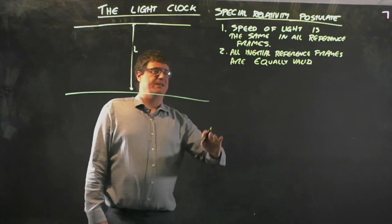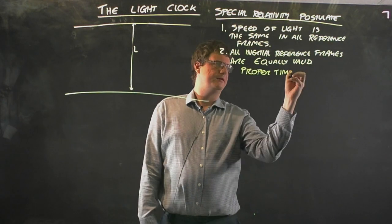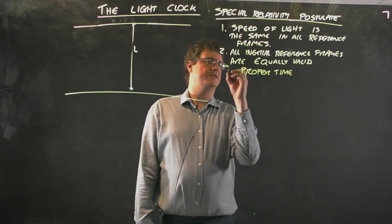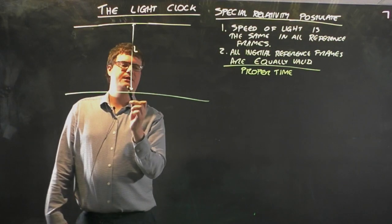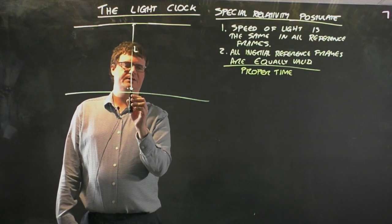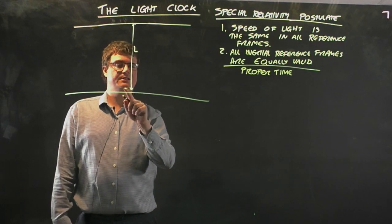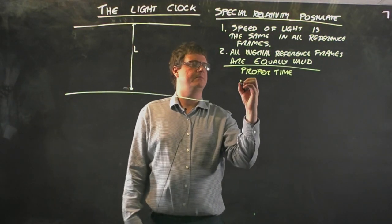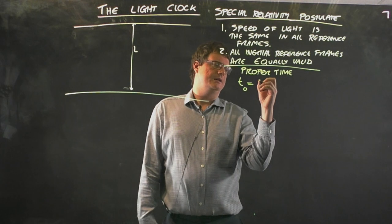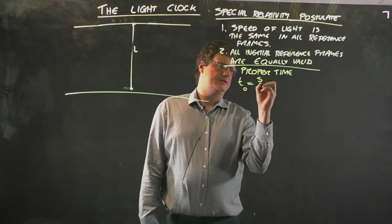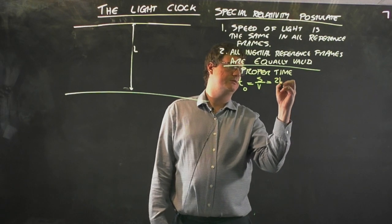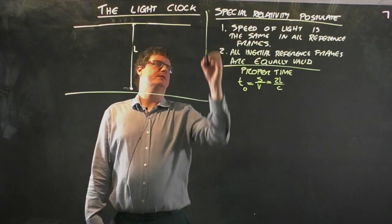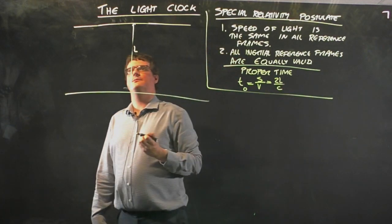If you're stationary relative to this thing you see the proper time. The proper time is the time where the two events happen in the same place. The two events are the light leaving this bottom mirror and the light coming back to this bottom mirror. We call that T naught and it's equal to the distance the light travels divided by the speed of light, which is 2L on C.